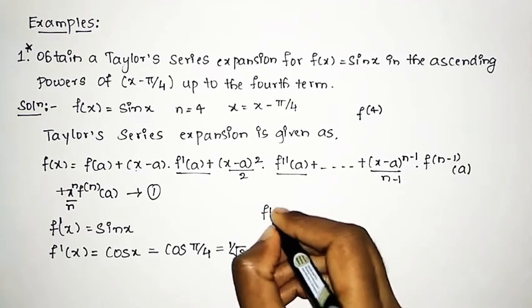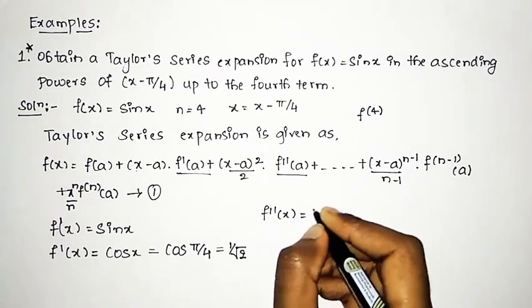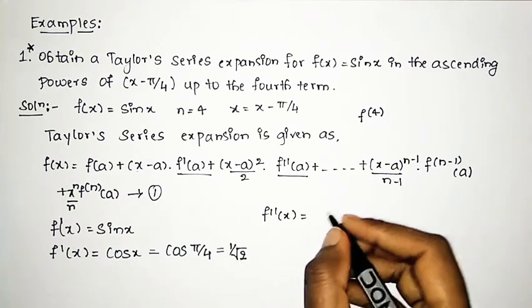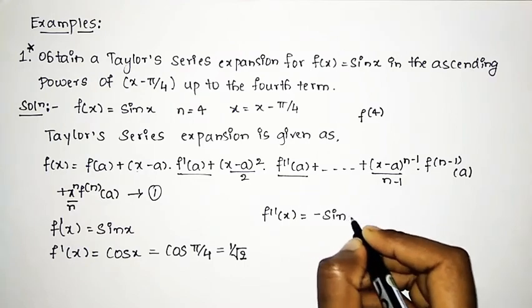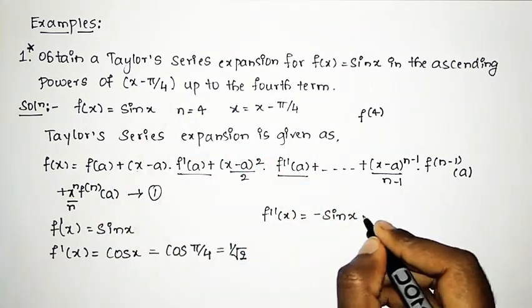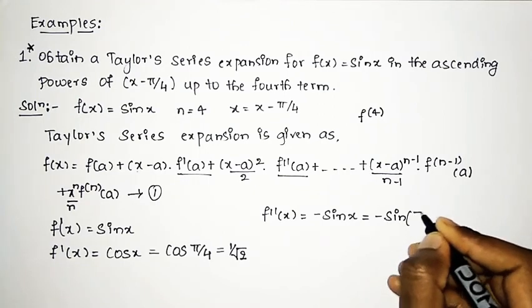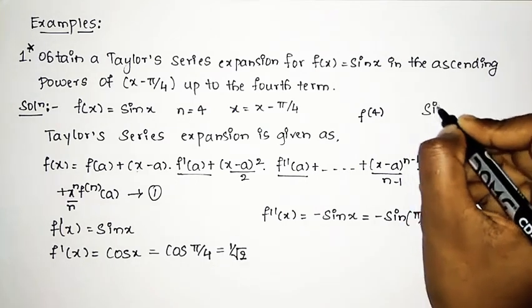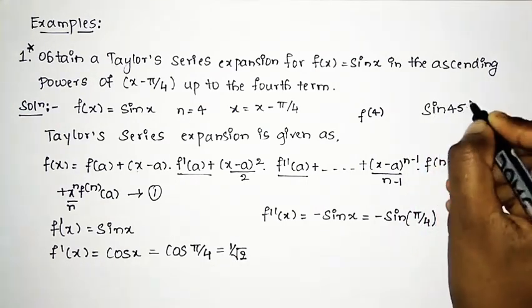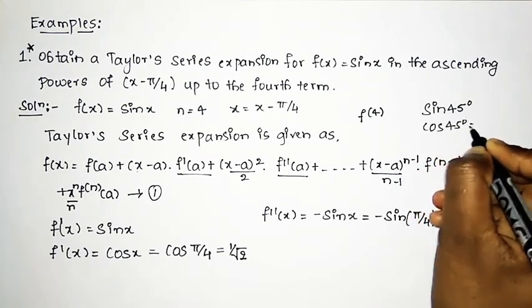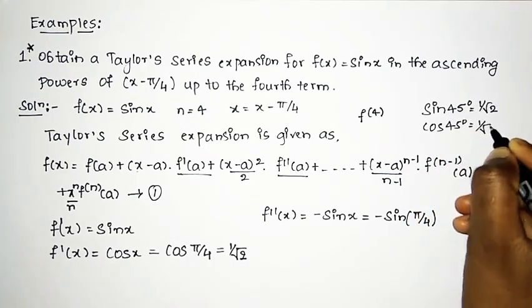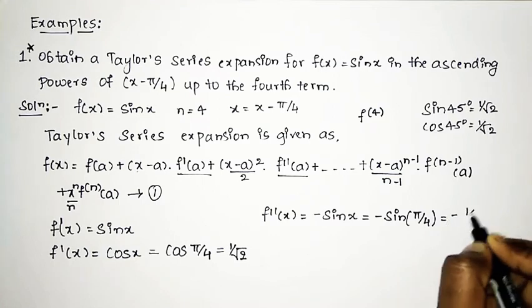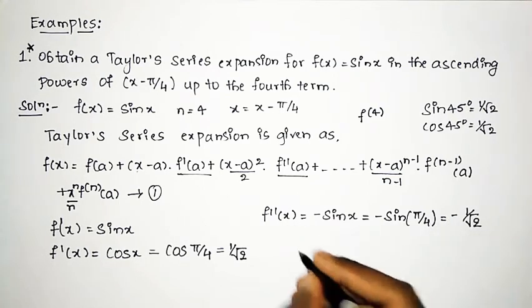Similarly, the second derivative: f''(x) is the derivative of cos(x), which is -sin(x). Replacing x with π/4, we get f''(a) = -sin(π/4). Since sin(π/4) = sin 45° = 1/√2, we have f''(a) = -1/√2.